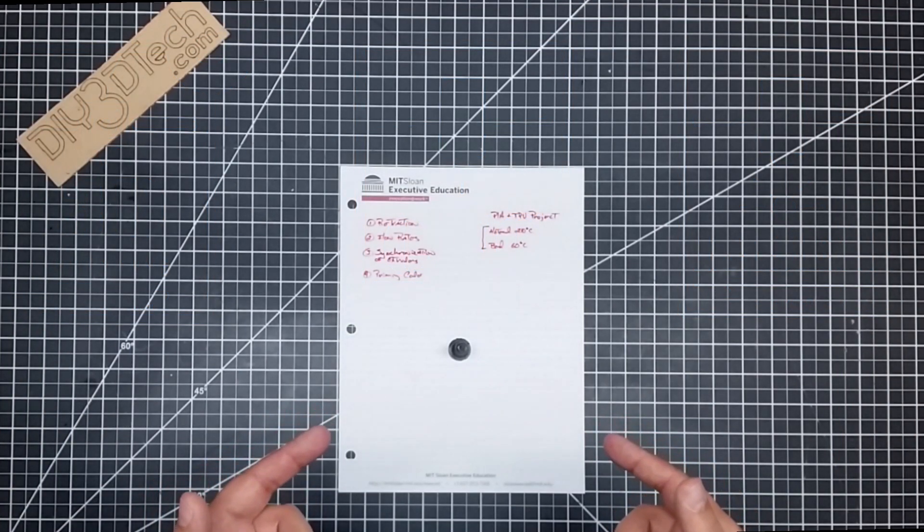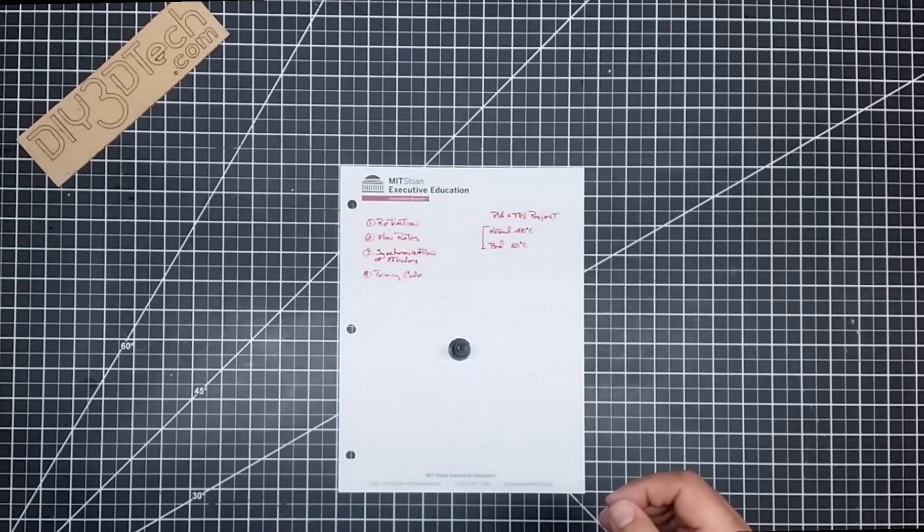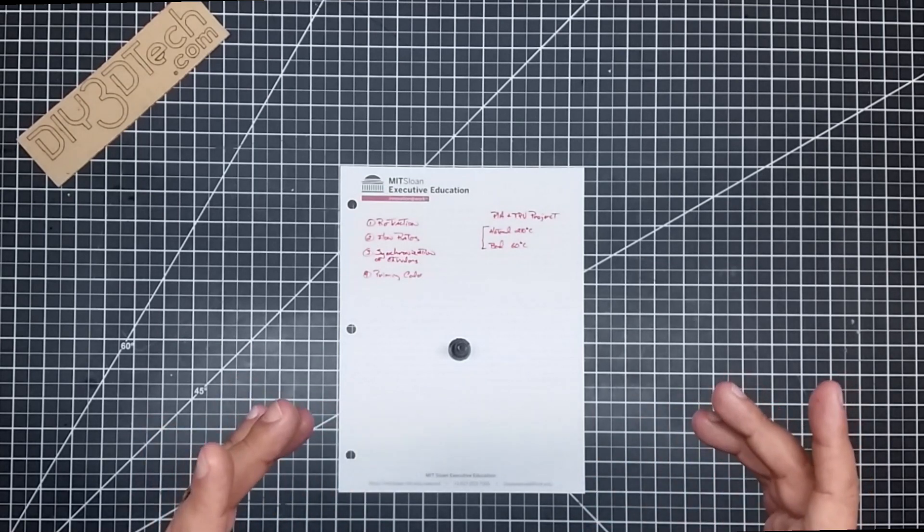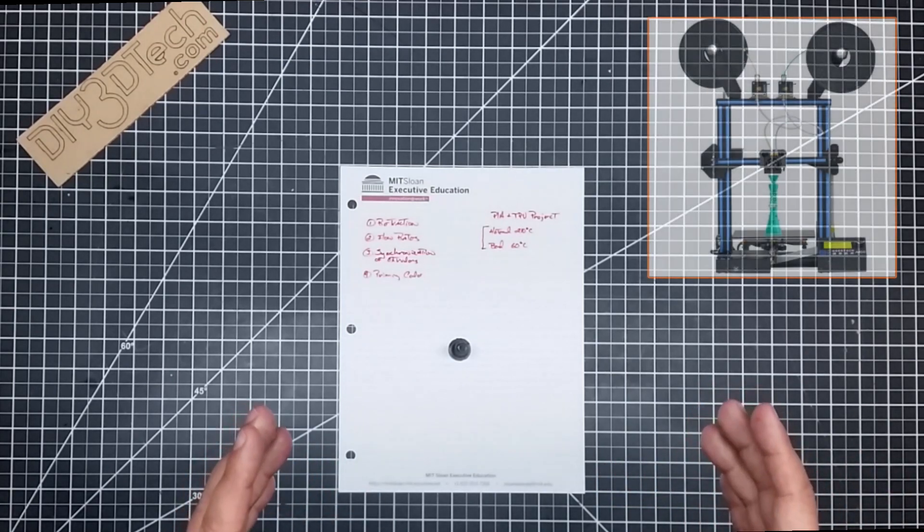Welcome to this episode of DIY3Dtech.com. In this episode we're going to talk about mixing PLA and TPU. Now I know from Ghostbusters it's not good to mix the streams, but hey I went ahead and did it anyway.